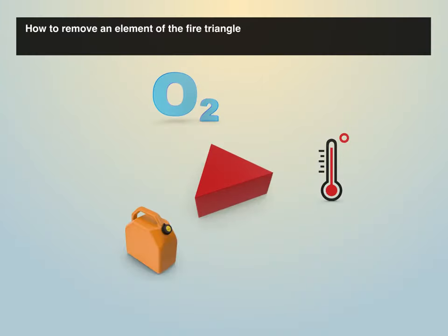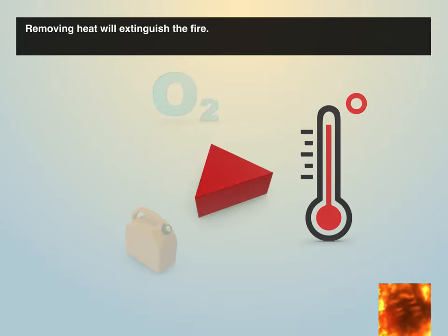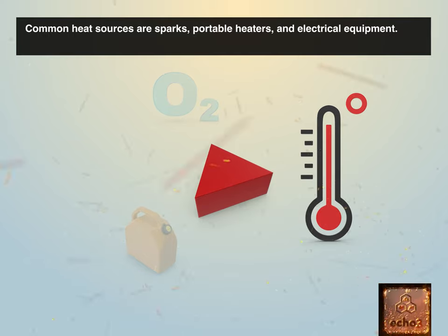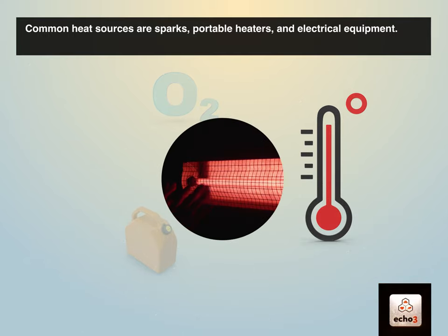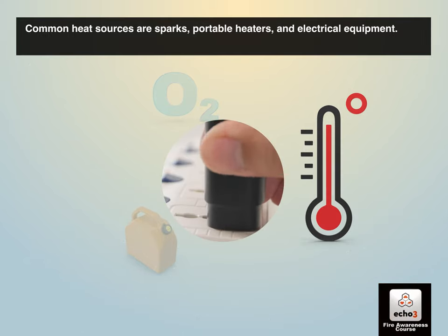How to remove an element of the fire triangle. Remove heat. Removing heat will extinguish the fire. Common heat sources are sparks, portable heaters, and electrical equipment.